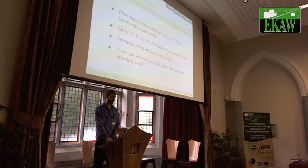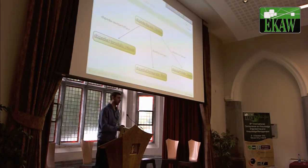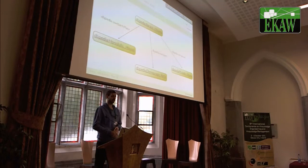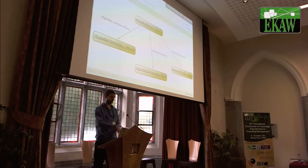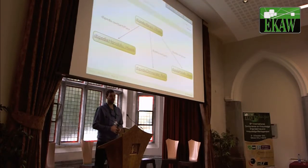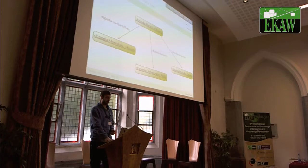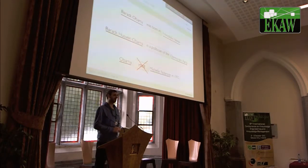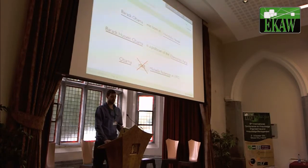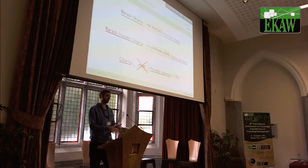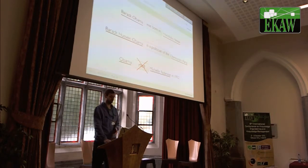The question was: how can we extract data from the document-oriented web? We developed this distant bootstrapping approach where we have the knowledge in DBpedia, for example, where you have a resource like Barack Obama, and you can see where he was born, which political party he's in, and his wife. Then you can use this knowledge to find sentences on the web where both of those resources appear, and then you can look at the string which is between those entities, and those strings represent the formal predicates.